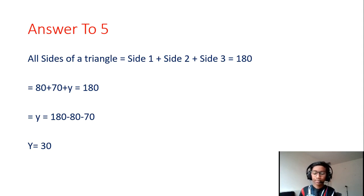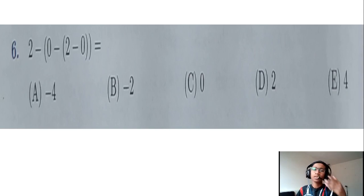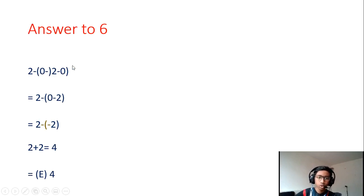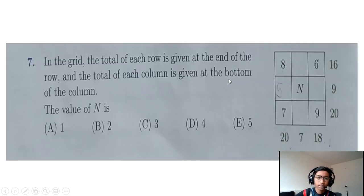When you understand the concept you get the answer done. Question number six: they've given us the equation two minus brackets zero minus bracket two minus zero. So two minus zero is two, then zero minus two is minus two. Inside the outer bracket we have two minus minus two, and since minus and minus makes a plus, two plus two is four. The answer is E, 4.